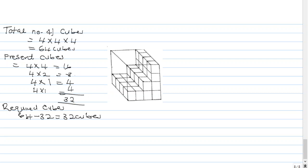So to get the number of cubes that are required to fill the structure, we take 64 minus 32 to get 32 cubes.